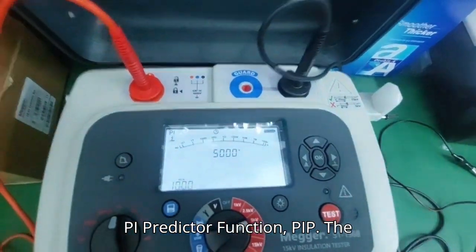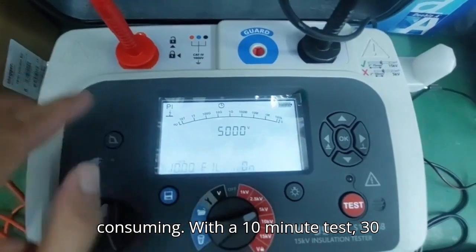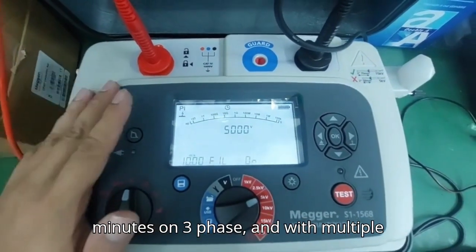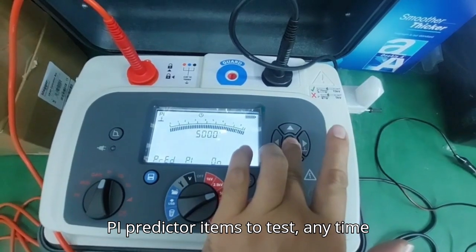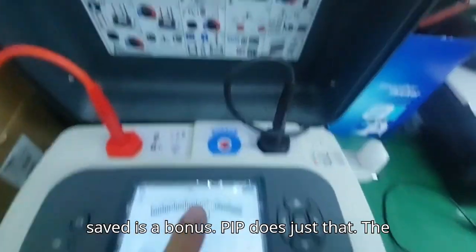PI predictor function (PIP). The polarization index test can be time-consuming with a 10-minute test, 30 minutes on three-phase, and with multiple items to test, any time saved is a bonus. PIP does just that.